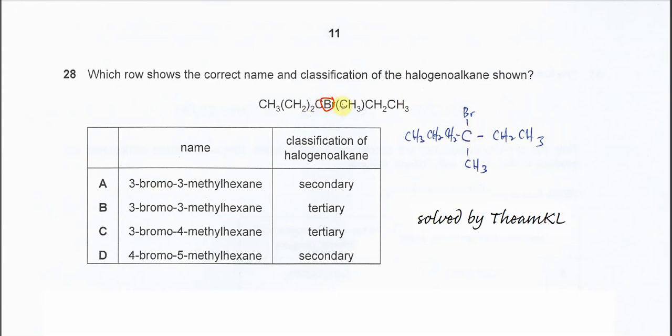The carbon with bromine is this one, and this carbon is bonded to propyl, ethyl, and methyl. So this carbon is bonded to these three alkyl groups, so it's a tertiary halogenoalkane. Whenever the carbon with the bromine or halogen is bonded to three alkyl groups, it's a tertiary halogenoalkane.